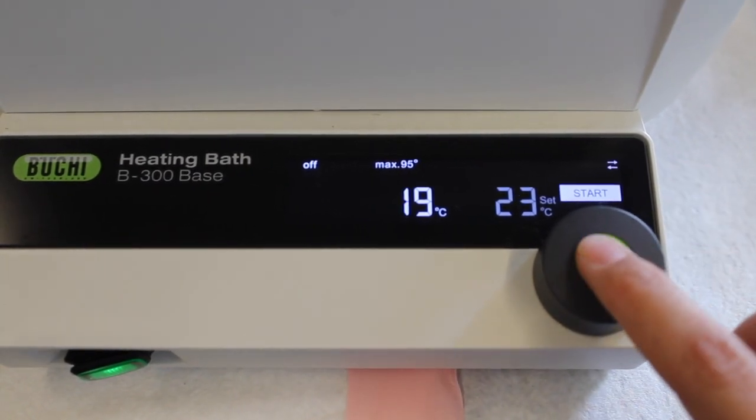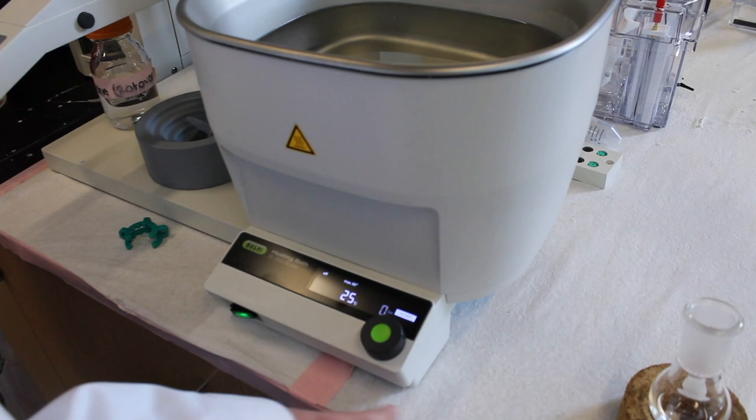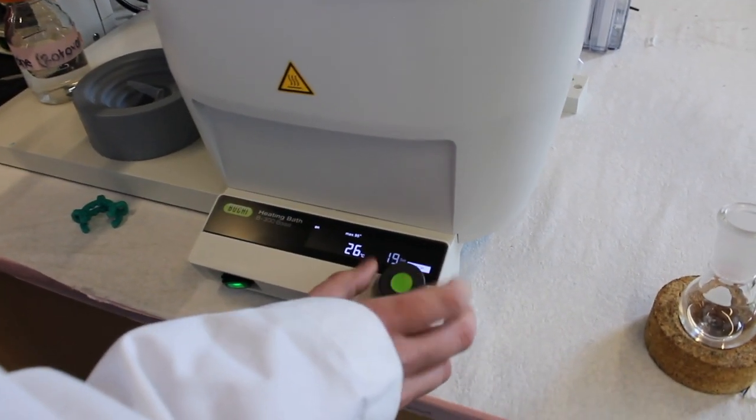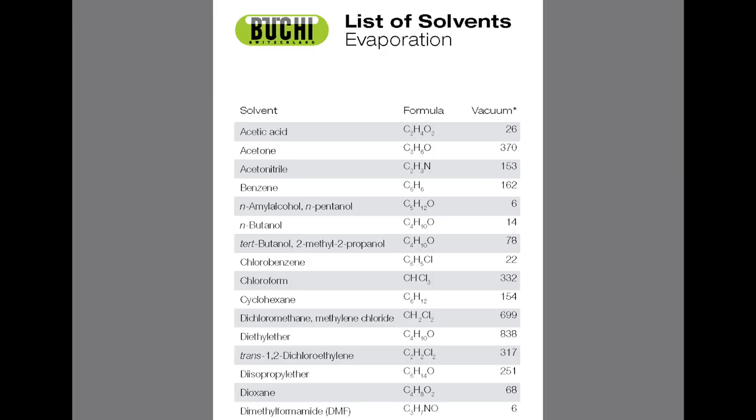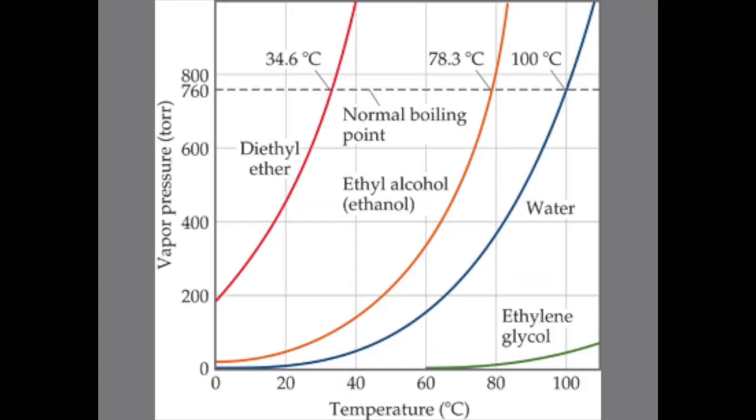It's very important to understand the type of solvent you are trying to remove before using the Rotovap. Certain solvents are more volatile than others and will require less heating or more pressure. The more volatile a solvent is, the less heating it needs. If you have a solvent with a lower boiling point, the water bath can remain at room temperature. However, if you're trying to remove a solvent with a high boiling point, you may need to increase the temperature and pressure.